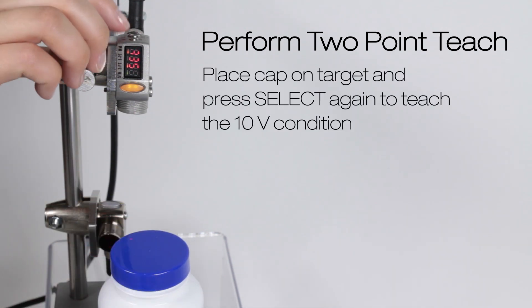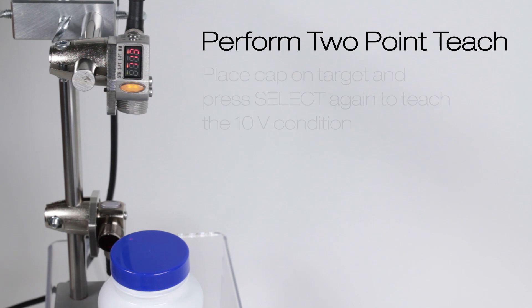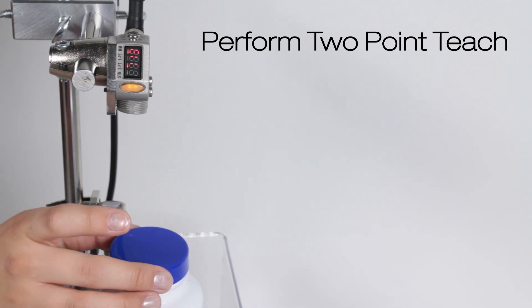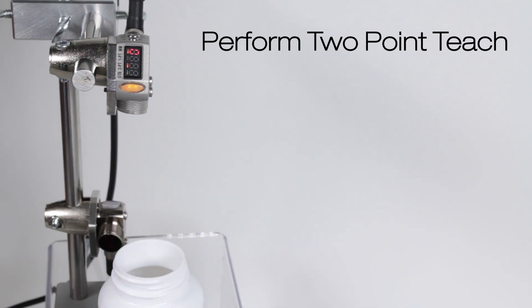Set 10-volt flashes, place the lid on the target, and teach the 10-volt setting by pressing select again. A distance flash is on the display indicating the location of the 10-volt setting.